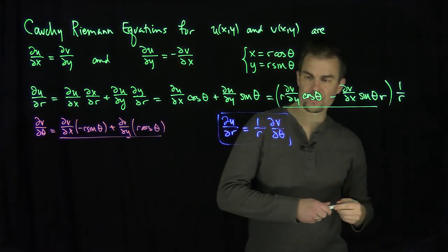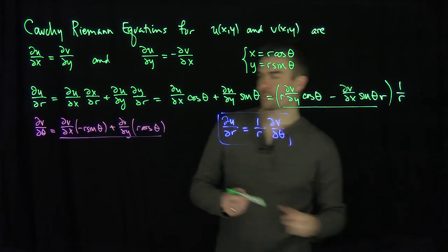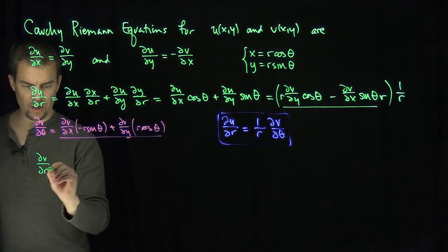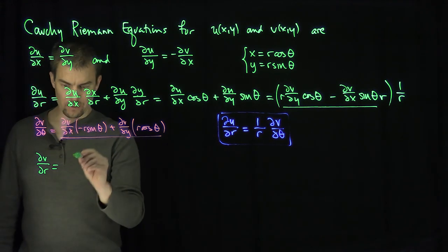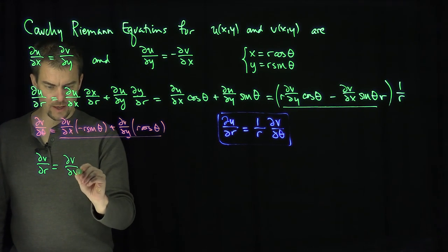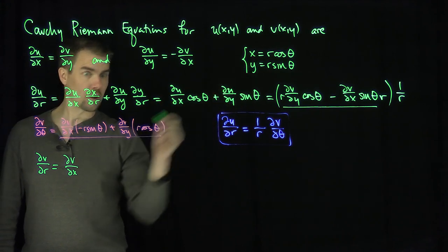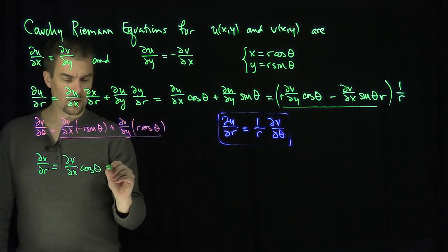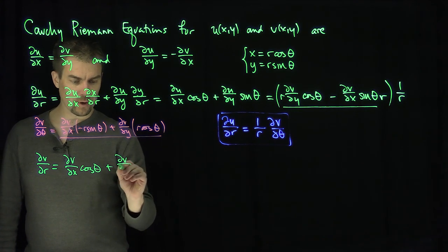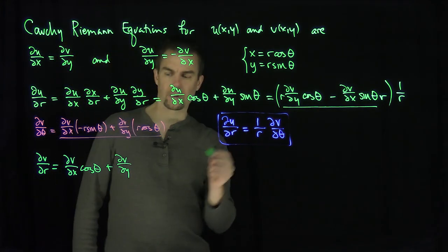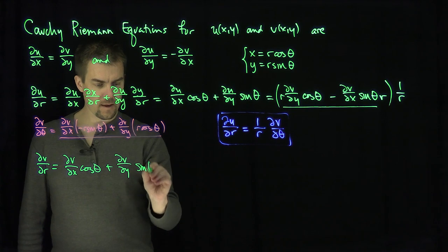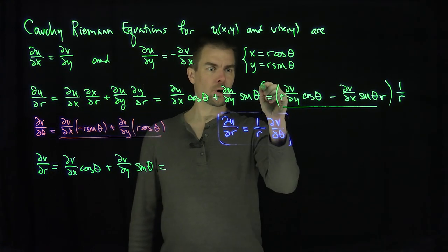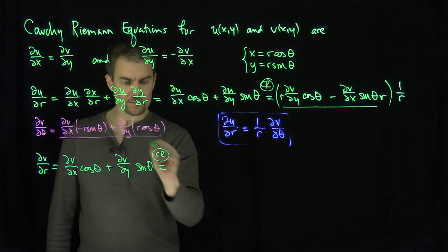Now let's find the second equation using the same procedure. Partial v partial r, by the chain rule, equals partial v partial x times partial x partial r plus partial v partial y times partial y partial r, which is partial v partial x times cosine theta plus partial v partial y times sine theta. Again, we apply the ordinary Cauchy-Riemann equations.